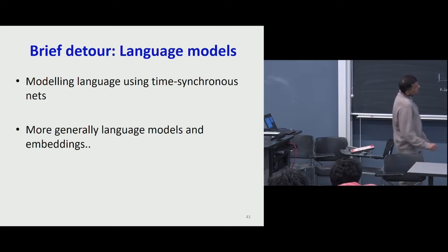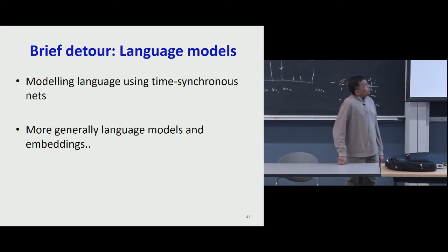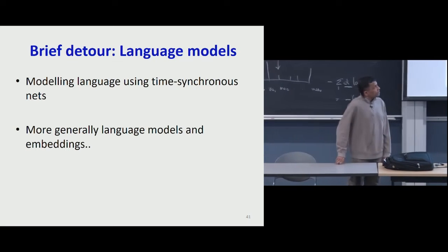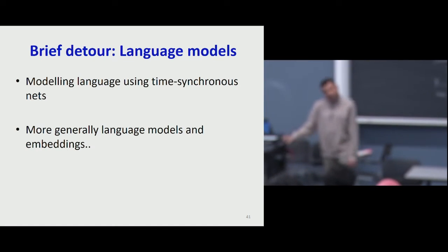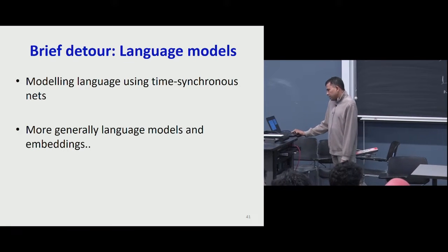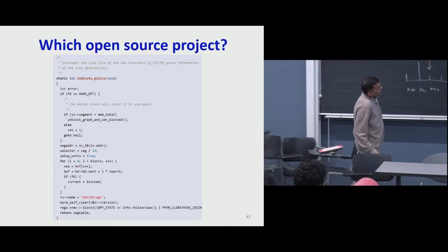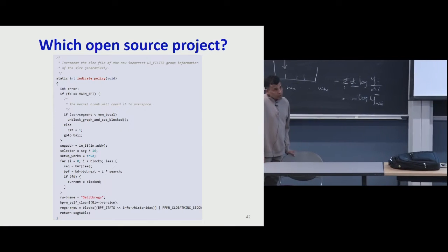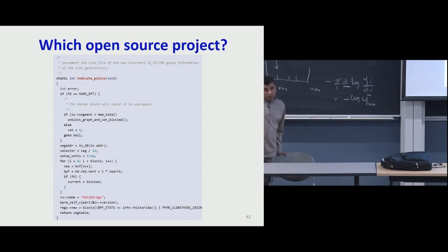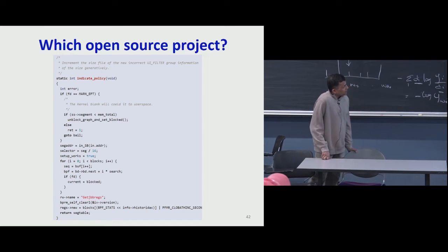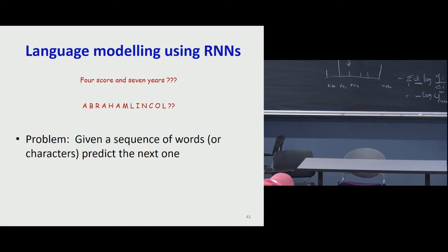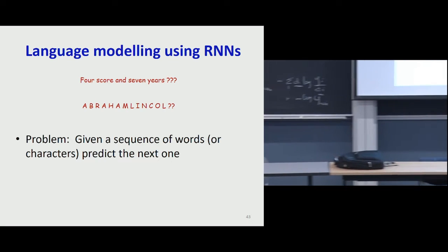When modeling language using time-synchronous networks, we get some interesting kinds of behaviors. Remember this example we began with — I showed you code that had been generated by a recurrent neural network. How exactly did this happen? This is based on the simple principle of prediction of time series. Let's abstract this back to the problem of predicting the next symbol in a sequence — which could be words or characters.